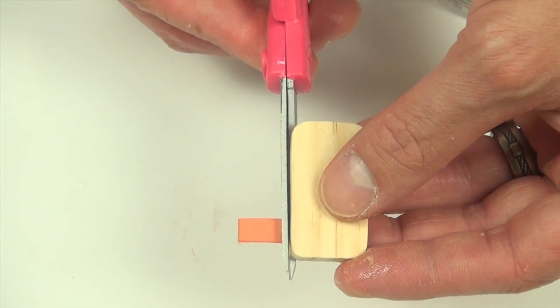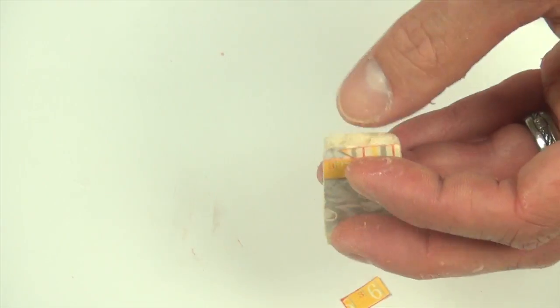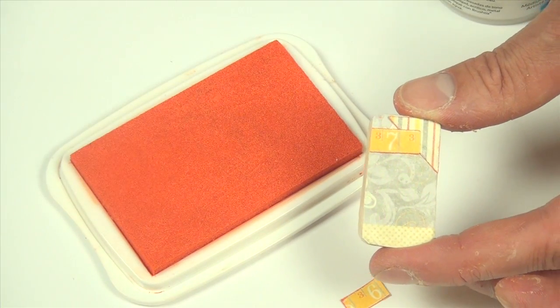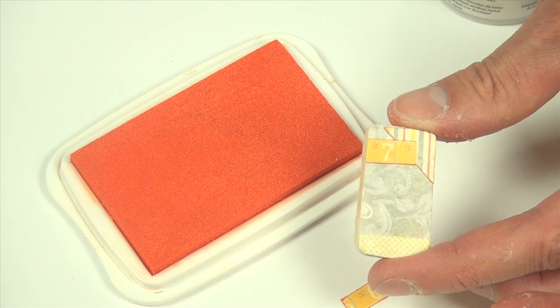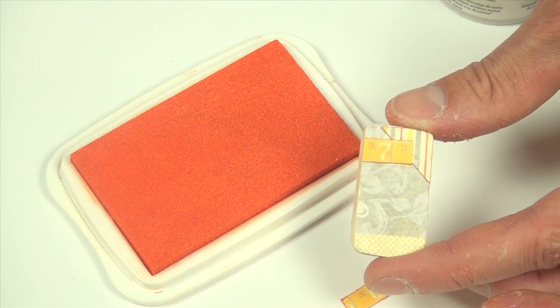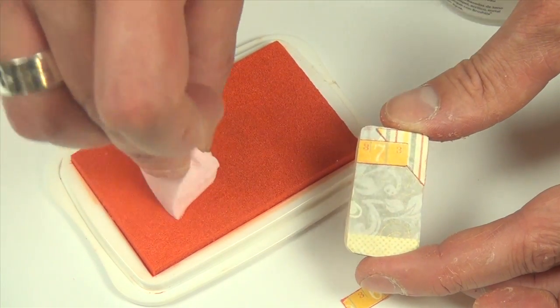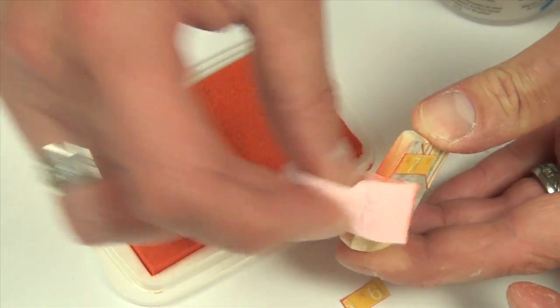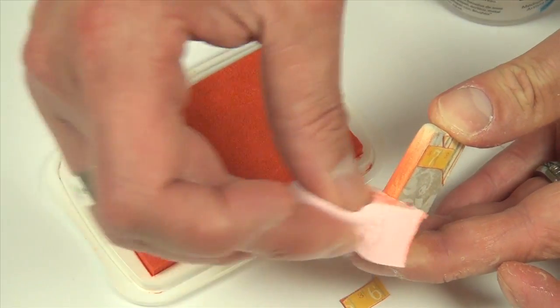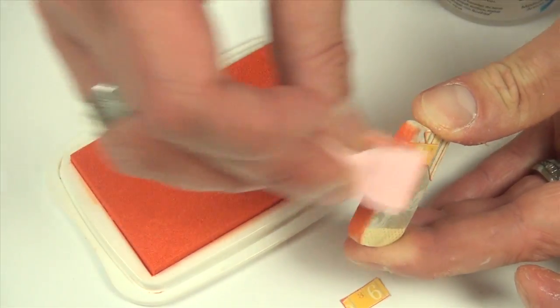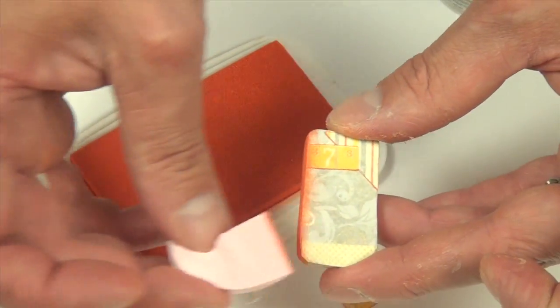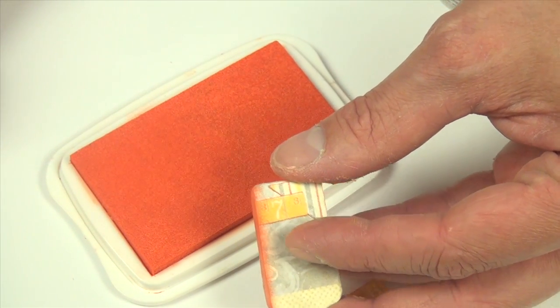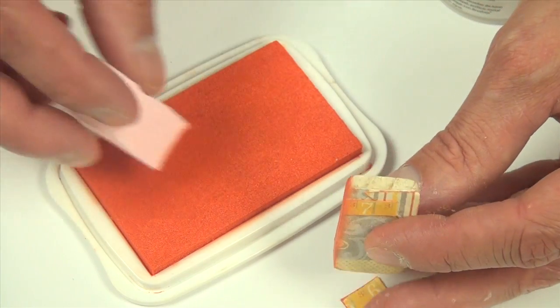I'm going to flip this over and trim the excess with a pair of scissors. Now I'm going to use our Memento Luxe in the Morocco color, and using an ink blusher, I'm just going to pick up some color and start edging along the sides of my fine wood embellishment. A nice thing you can do is bring this over the top edge as well, so you finish off that edge but also add a little bit of color onto the front to pull it all together.